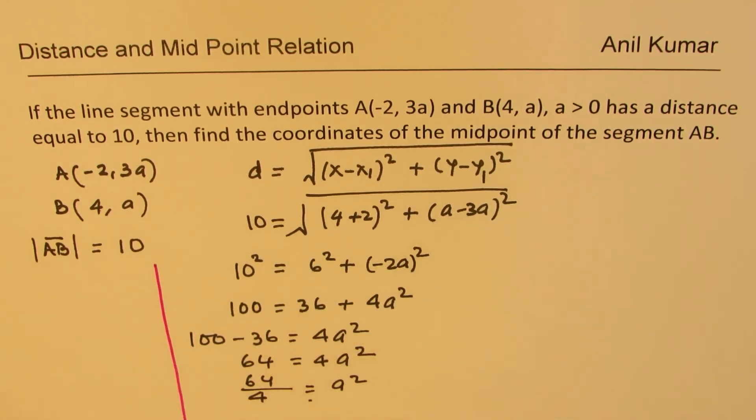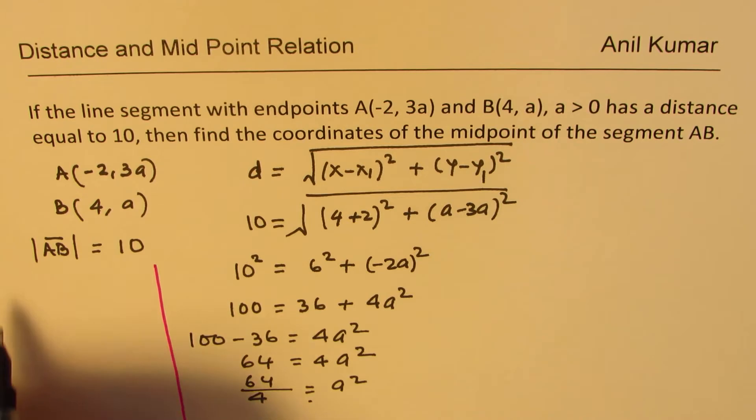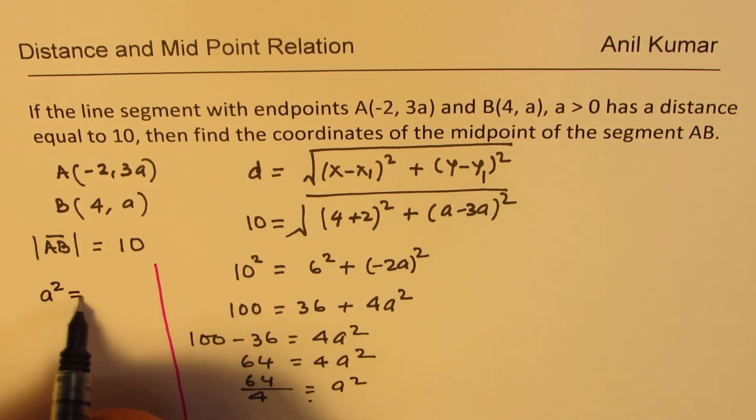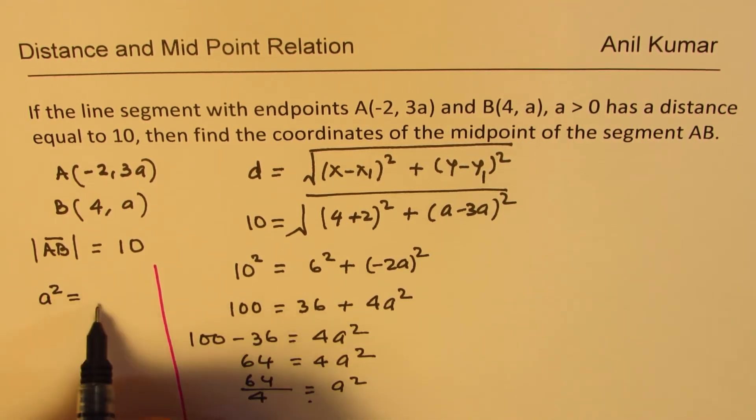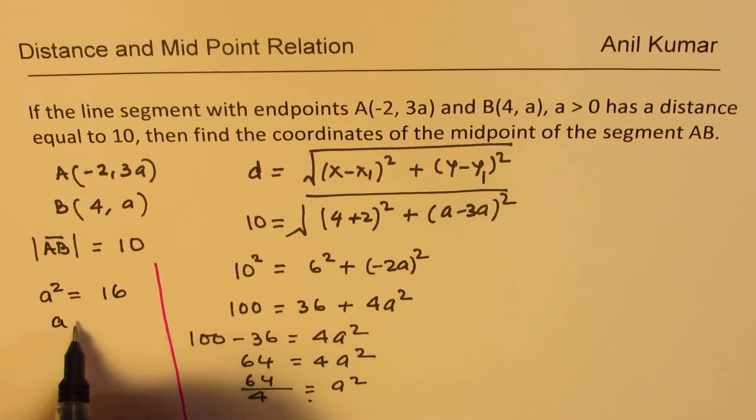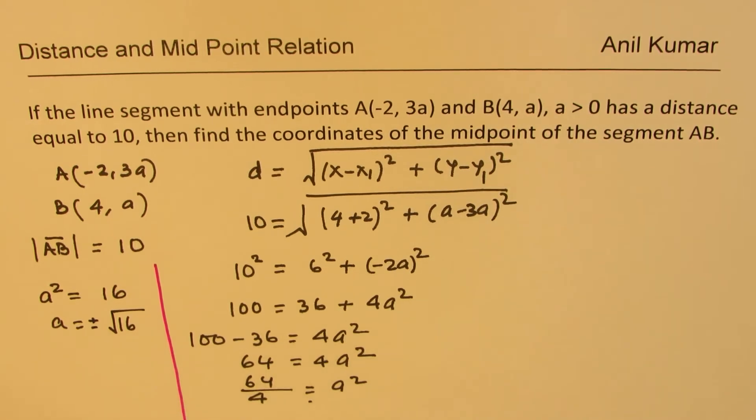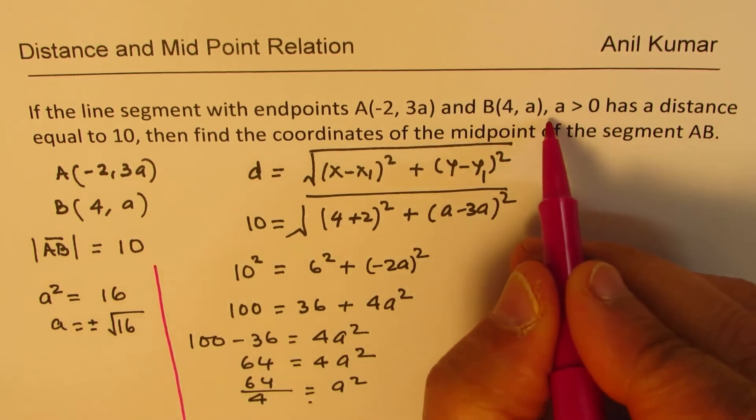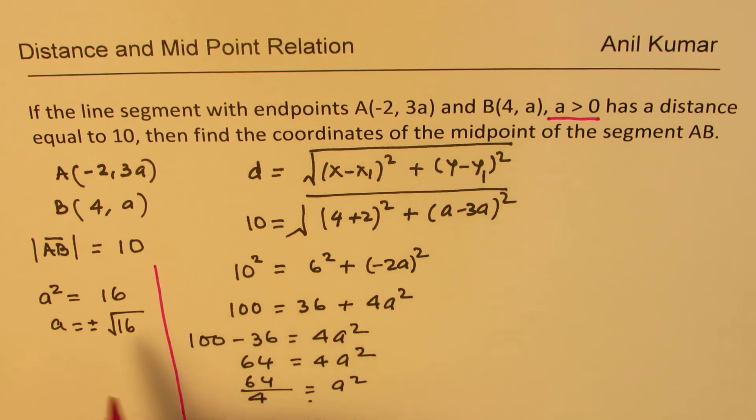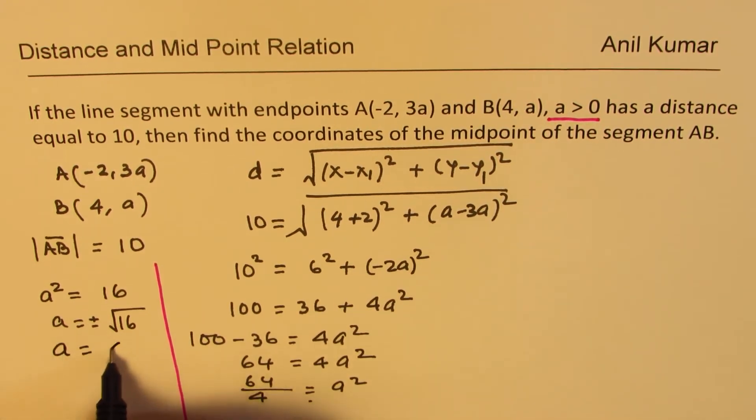What we have here is a² = 64/4 = 16, so a will be square root of 16. Now, we get plus and minus values of a. However, the condition given is that a > 0, so we'll take the positive value. Therefore, a = 4.